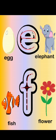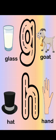Now let's come to the next letter, which is letter G. G for goat, G for glass. Repeat the vocabulary word after me — G for goat, G for glass. Very nice. And what's the sound of letter G? G. Very nice.